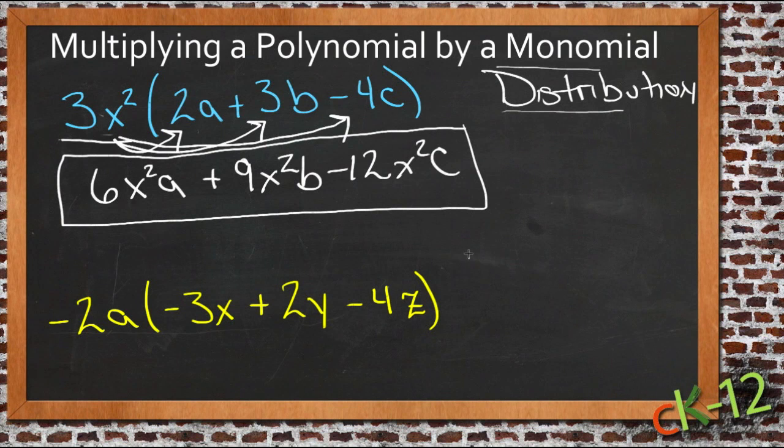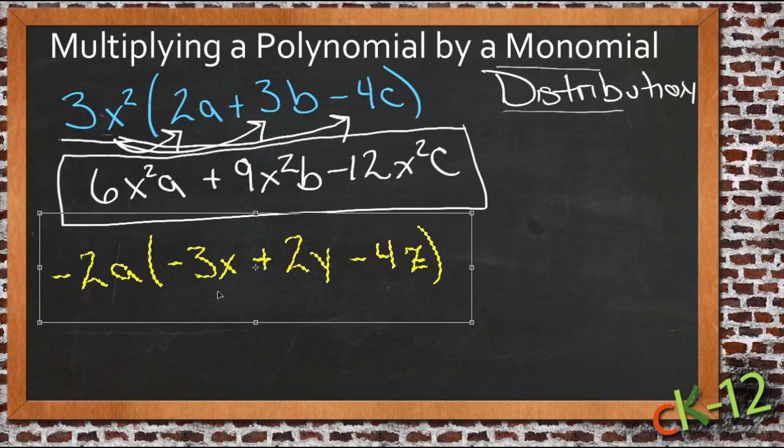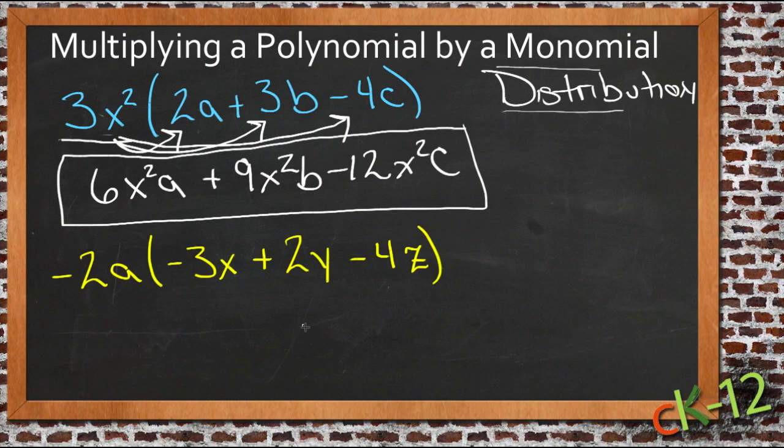So let's try one more here. Let me actually move this up just a little bit. Give us a little more room to work. There we go. Okay, so here we have negative 2a times negative 3x plus 2y minus 4z. So again, one step at a time.